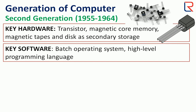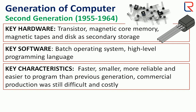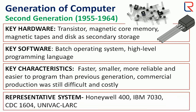The softwares are batch operating systems were developed, and high level programming languages were developed. The characteristics are faster, smaller, more reliable, and easier to program than the previous generation. Commercial production was still difficult and costly. The representative systems are Honeywell 400, IBM 7030, CDC 1604, and UNIVAC LARC.